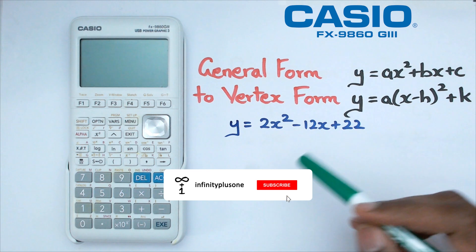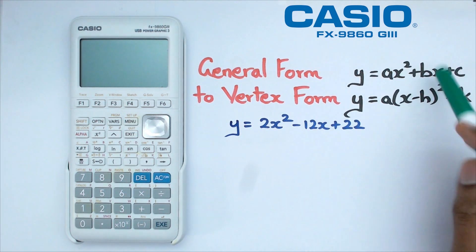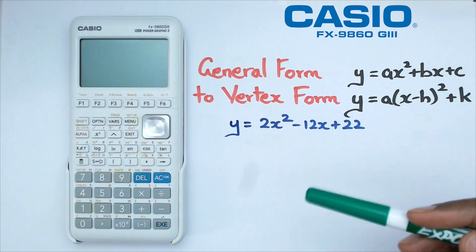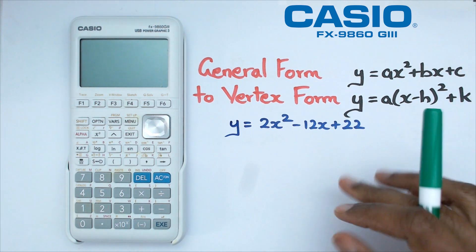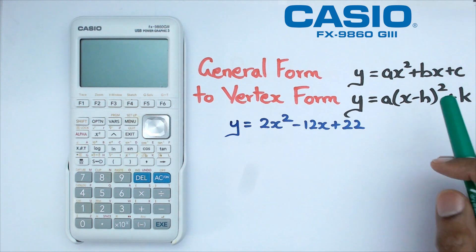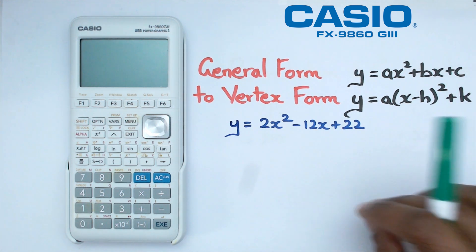Alright, so normally what happens is that here I have a parabola in the general form and what I'd like to do is I'd like to write this in the vertex form. Now what you can do is you can factorize this, you can complete the square and you can end up with the vertex form.